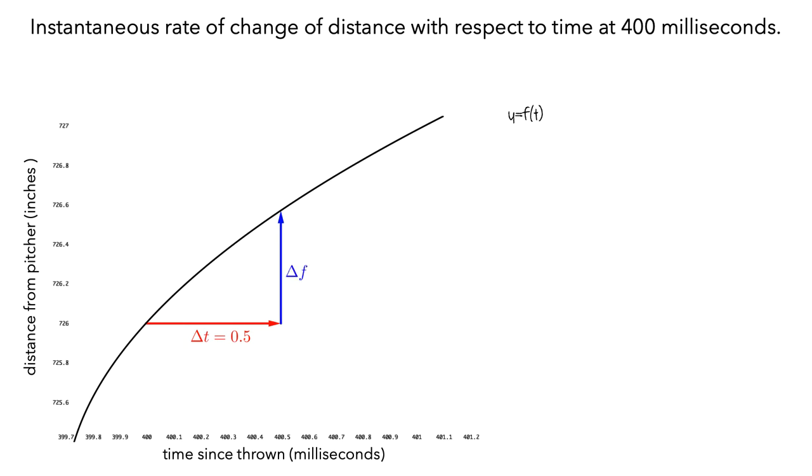At t equals 400 milliseconds, the instantaneous rate of change of distance with respect to time is approximated by the average rate of change, which is delta f divided by delta t.